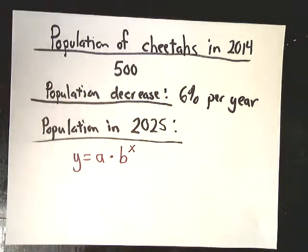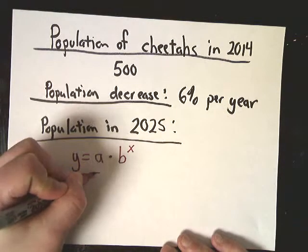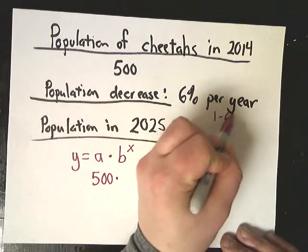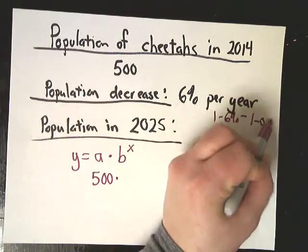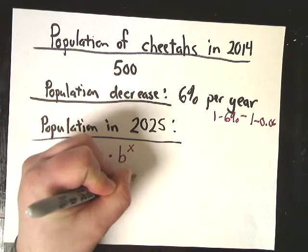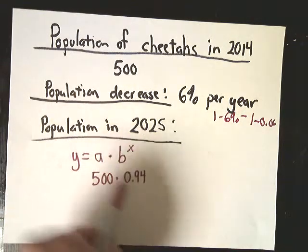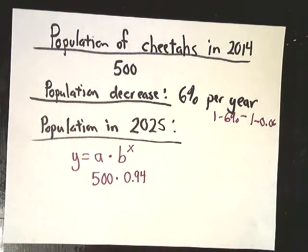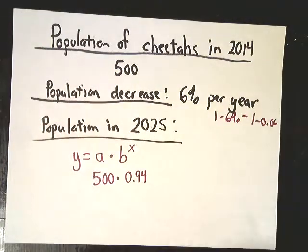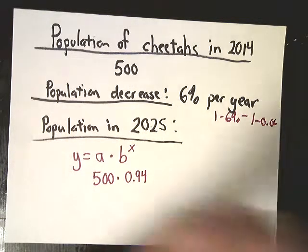This is a scenario we're guessing about. The likelihood of it maintaining exactly a 6% decrease per year is unlikely — it'll probably increase or decrease from there. My starting point is 500. My decay factor would be 1 minus 6%, or 1 minus 0.06, which is 0.94. The x value is a little different here — don't put 2025, otherwise that'll tell you what happens in 2,000 years. You have to make an adjustment: how many years from 2014 to 2025? That's 11 years.